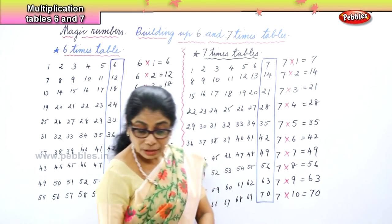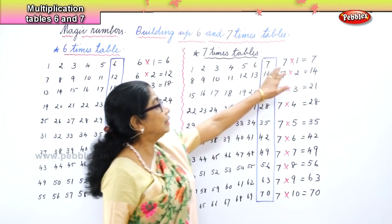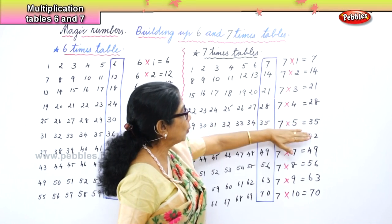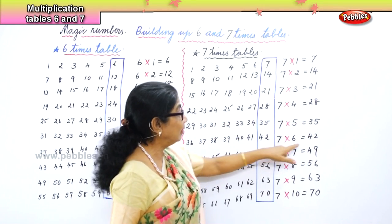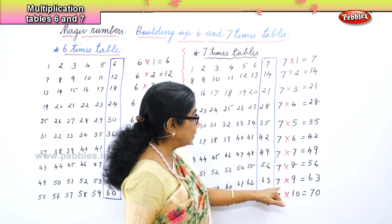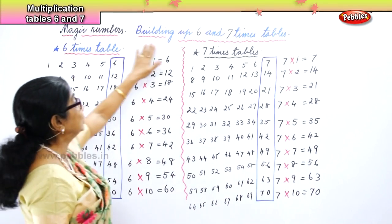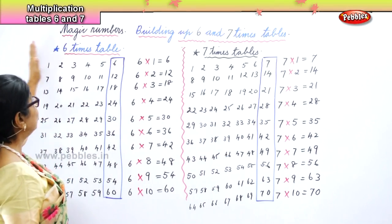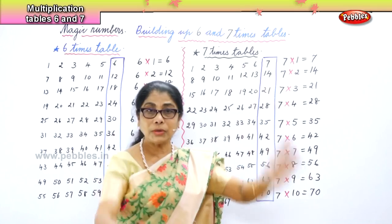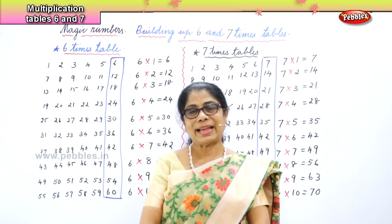So you see how easily using the magic numbers we build our 7 times table. Seven ones are seven, seven twos are fourteen, seven threes are twenty-one, seven fours are twenty-eight, seven fives are thirty-five, seven sixes are forty-two, seven sevens are forty-nine, seven eights are fifty-six, seven nines are sixty-three, seven tens are seventy. We did the magic numbers building up six and seven times table. All you have to do is write numbers one to six, the last number gives you your table, and the seven times write numbers one to seven, box in the last number and easily you get the tables.